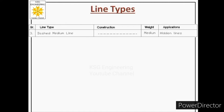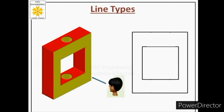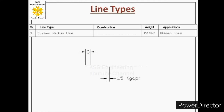Next, we will talk about the dashed medium line. Its construction is dashed and its weight is medium. It is used to represent the hidden portion of the object in drawings. For example, if two holes in an object are not visible from the front, dashed medium lines are used to represent them in the front view. To draw this line, we draw small dashes of 3 mm length separated by a 1.5 mm gap, repeating this pattern to the required length.